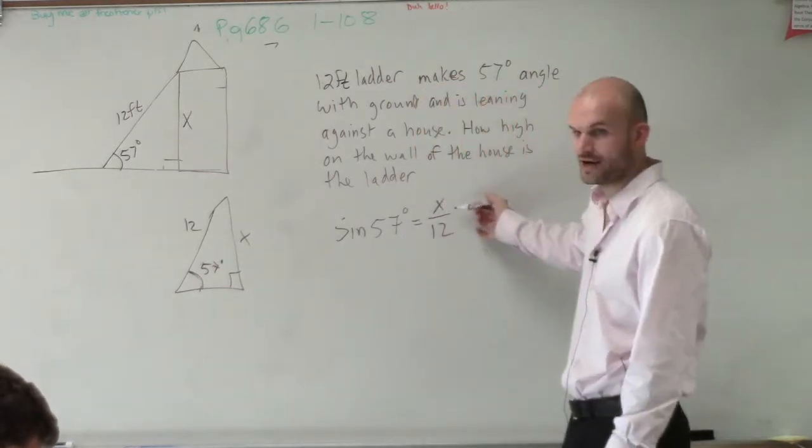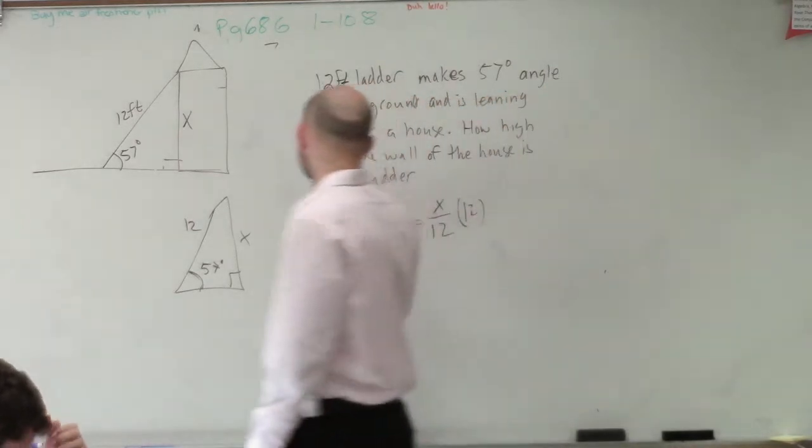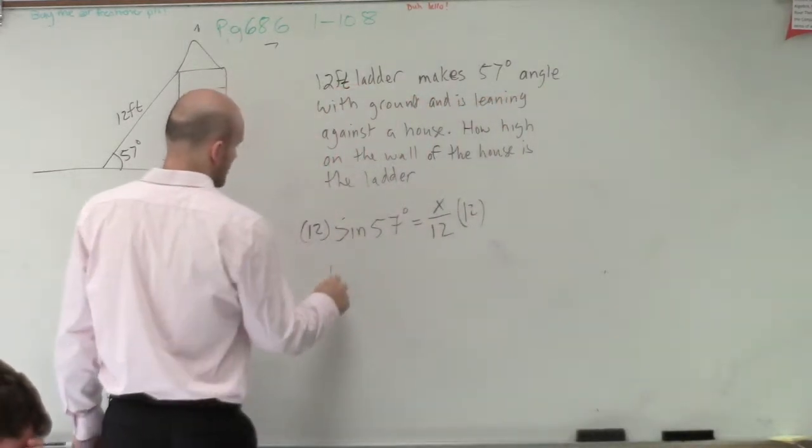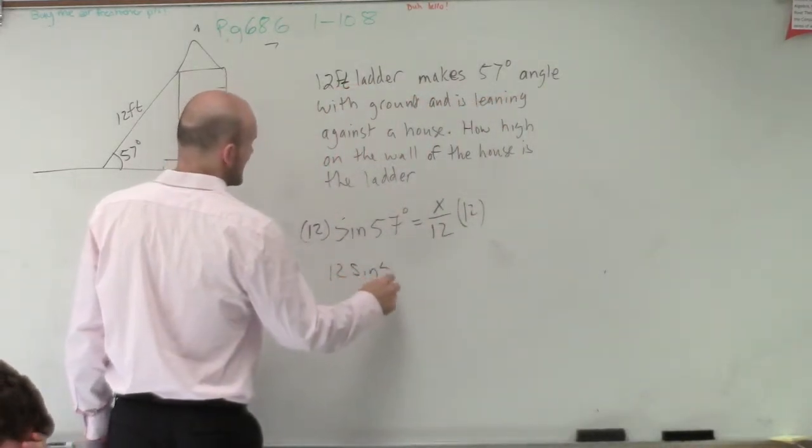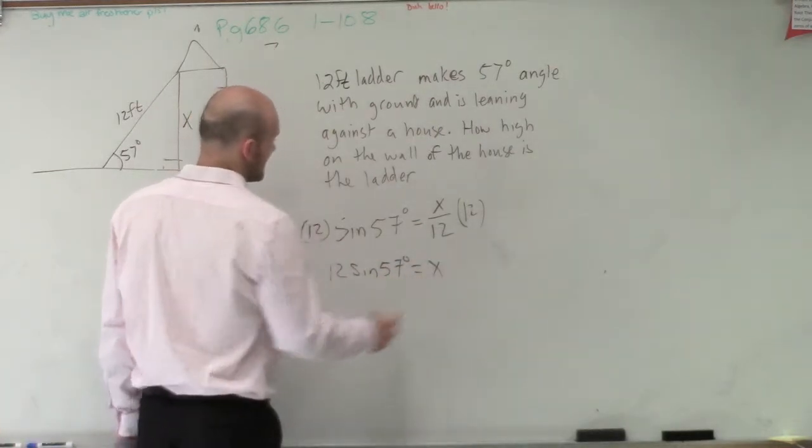Now, remember, we're trying to solve for x. So therefore, I'll multiply by 12 on both sides. And I get 12 times the sine of 57 degrees equals x.